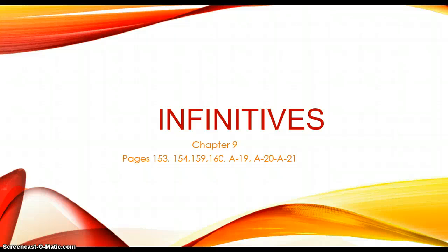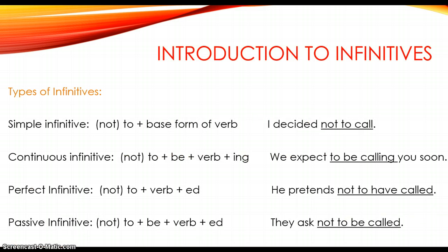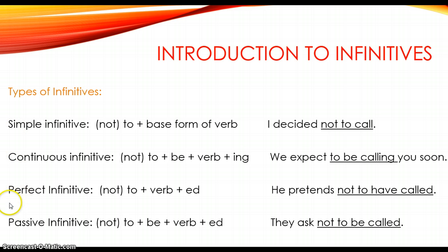Today we're going to be talking about infinitives, which can be found on these pages in Chapter 9. Let's introduce you to infinitives first. There are four different types of infinitives: simple infinitives, continuous infinitives, perfect infinitives, and passive infinitives. I've given you the formula for each and an example sentence next to it.